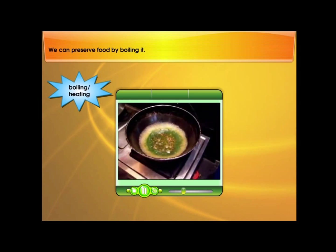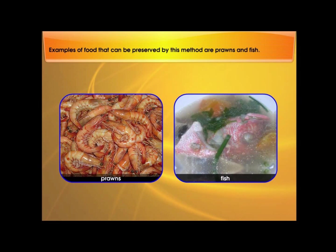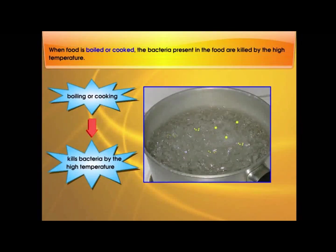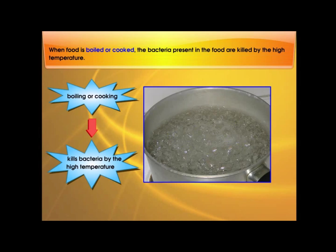We can preserve food by boiling it. Examples of food that can be preserved by this method are prawns and fish. When food is boiled or cooked, the bacteria present in the food are killed by the high temperature.